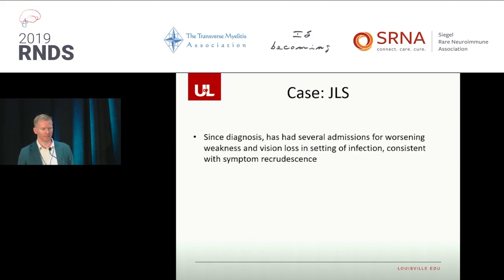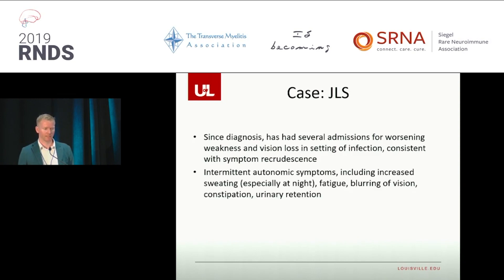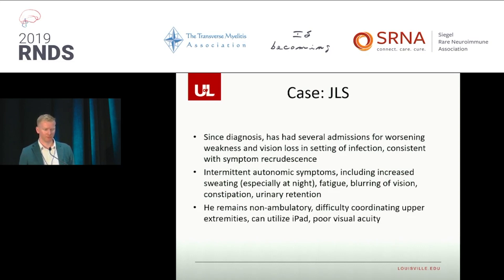He's had several admissions since being on rituximab, mostly for complications of the treatment. As several people on the panel discussed, sometimes the treatments are worse than the actual disease itself — and that's always our fear. He has intermittent autonomic symptoms including increased sweating especially at nighttime, fatigue, blurring of vision, constipation, and urinary retention. He remains non-ambulatory but can see well enough to use an iPad, and has difficulty coordinating his upper extremities.